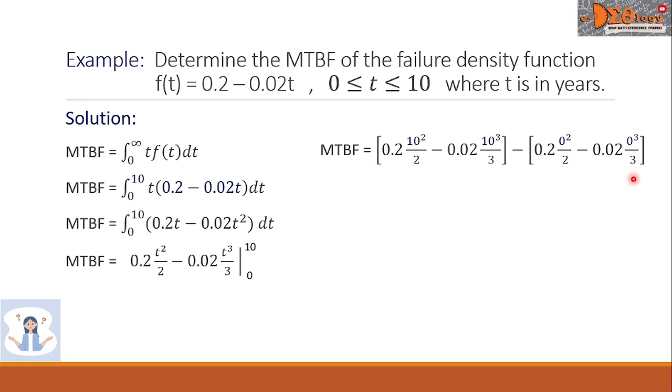This 0.2T becomes 0.2 times T squared over 2, minus this function here becomes 0.02 times T cubed over 3. Then, we will evaluate this from 0 to 10. So, it becomes like this. The first group is about this function and the variable T is changed into 10, minus the second group. This same function where T is replaced by 0 respectively. Look at the second group. Because of the 0, all of this becomes 0.